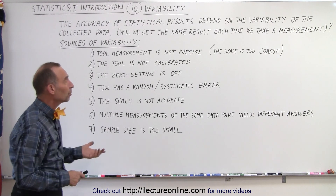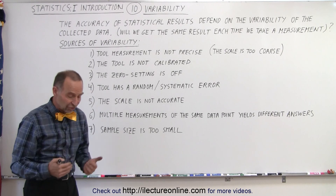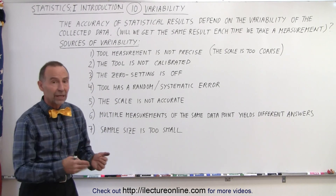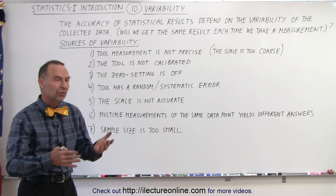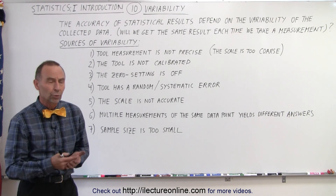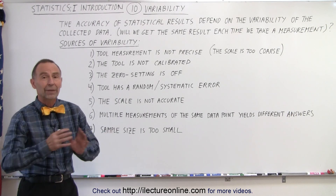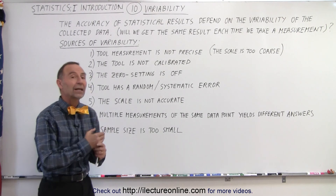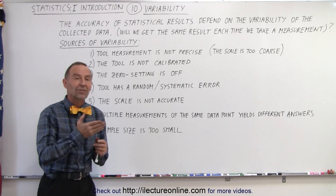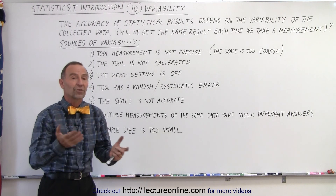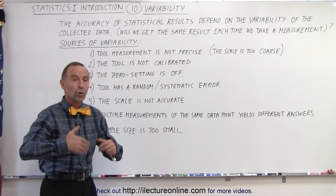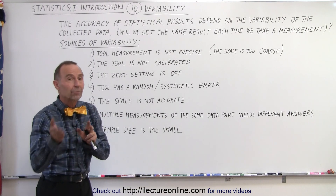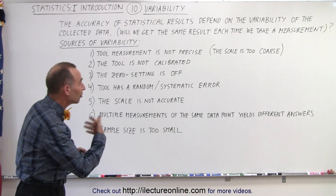Does the tool have random or systematic errors? For example, each time you step on the scale and measure your weight, you get off and back on and each time you get a different value — there's randomness to that tool. In other words, it has some random error that cannot be predicted. Or is there a systematic error? That is, it basically adds about 2, 3, or 4 percent to every measurement, so the more weight you put on the scale, the greater the difference between the true value and the measured value — that's called systematic error.